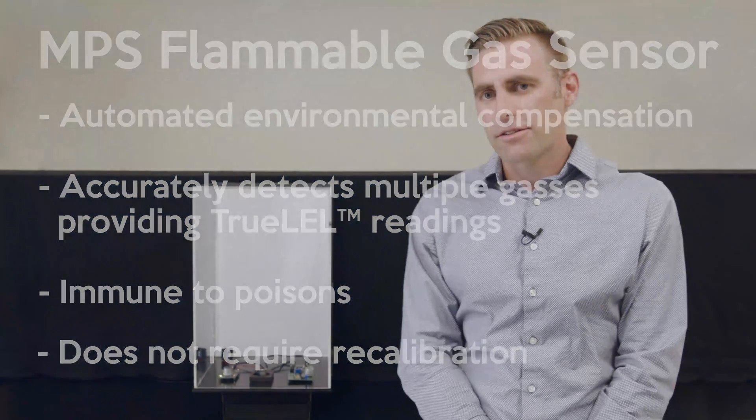Today's demonstration is going to show how the NPS addresses some of the shortcomings of existing flammable gas sensors, namely the NDIR and the pellistor sensor. We're going to do a demonstration where we show the sensors methane, which is what all these sensors are calibrated with, and then we're going to show it two gases that it's not calibrated with, namely hydrogen and butane.